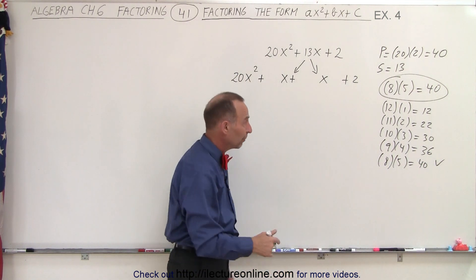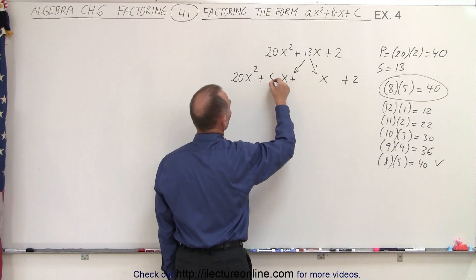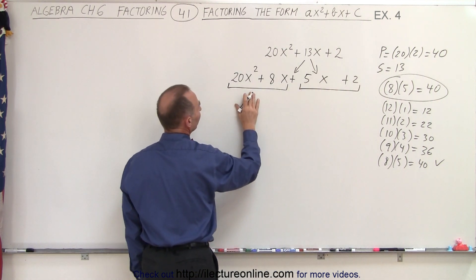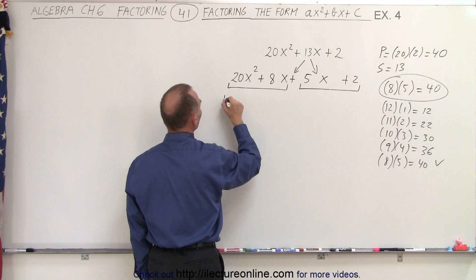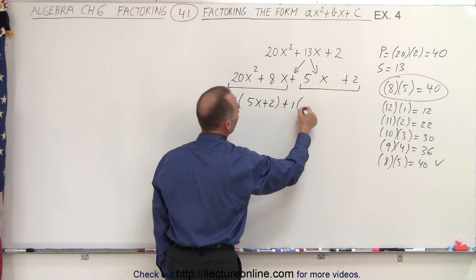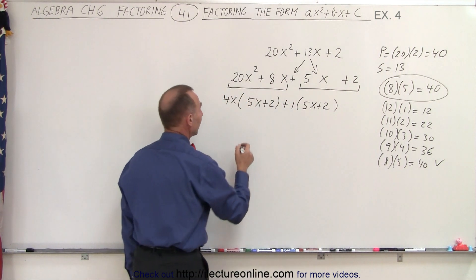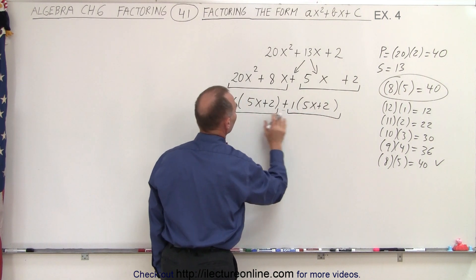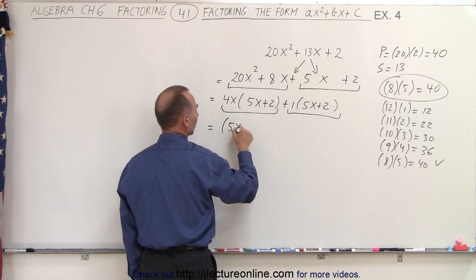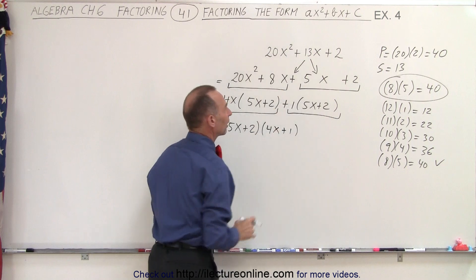Sometimes you can just guess; sometimes you go to the systematic process. But once you have the combination, you plug those numbers in — 8 here and 5 here — and now group them into groups of two terms. Here we factor out a 4x, which leaves us with 5x plus 2. Here all we can do is factor out a 1, giving us 5x plus 2. The common factor is 5x plus 2, so we factor that out, and this can be written as 5x plus 2 times 4x plus 1. That is the factored form of the original problem.